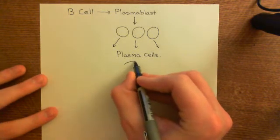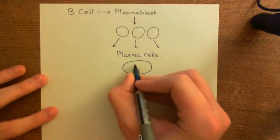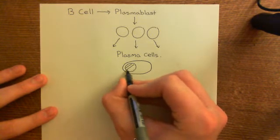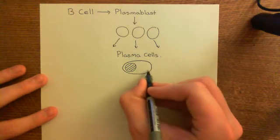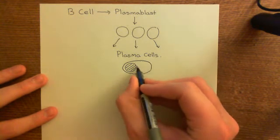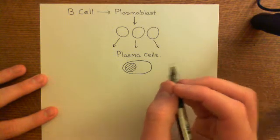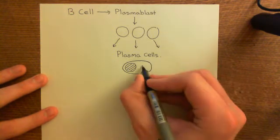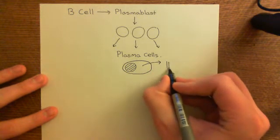So what do plasma cells do? Well, plasma cells are factories which produce antibodies, which are a soluble version of the B cell receptor. You'll notice that the plasma cell now has a much larger cytoplasm, because it has to produce stuff and therefore needs cytoplasm. Whereas the naive B and T lymphocytes didn't need cytoplasm because they didn't have to produce anything. These plasma cells are going to start chucking out antibody into the bloodstream.